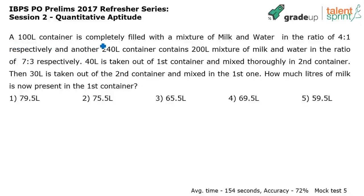A 100-liter container is completely filled with a mixture of milk and water in the ratio of 4 to 1 respectively, and another 240-liter container contains 200 liters of mixture of milk and water in the ratio of 7 to 3 respectively.